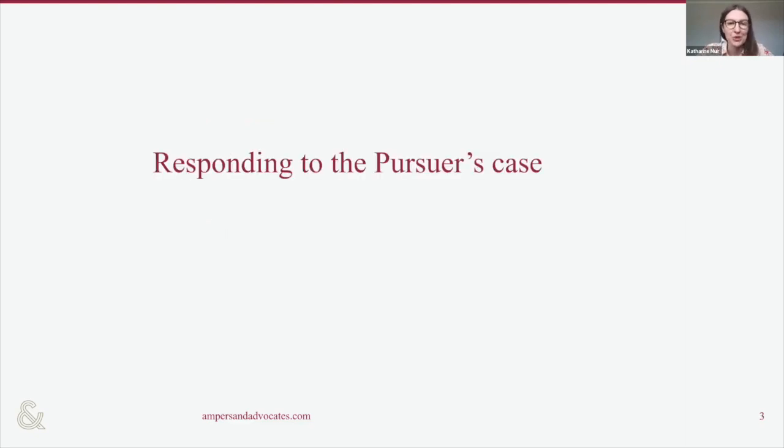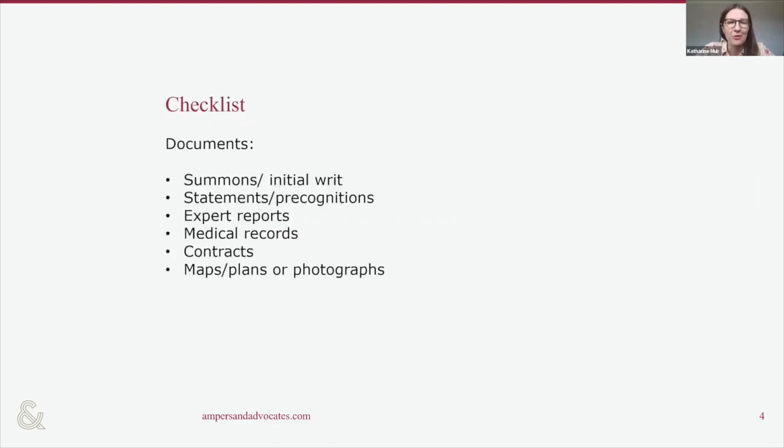So I've put here a checklist of things that you might want to look at before you start drafting. And so first of all, there are various documents that you might want to have in front of you. So you will at least have a copy of the summons or the initial writ. You might even have some precognitions or statements that have been taken. You may have expert reports, medical records, contracts, and maybe some photographs or plans, depending on what kind of case it is. You may not have any of these things. You may just have the writ, but these are the sort of things that you will want to have in front of you.